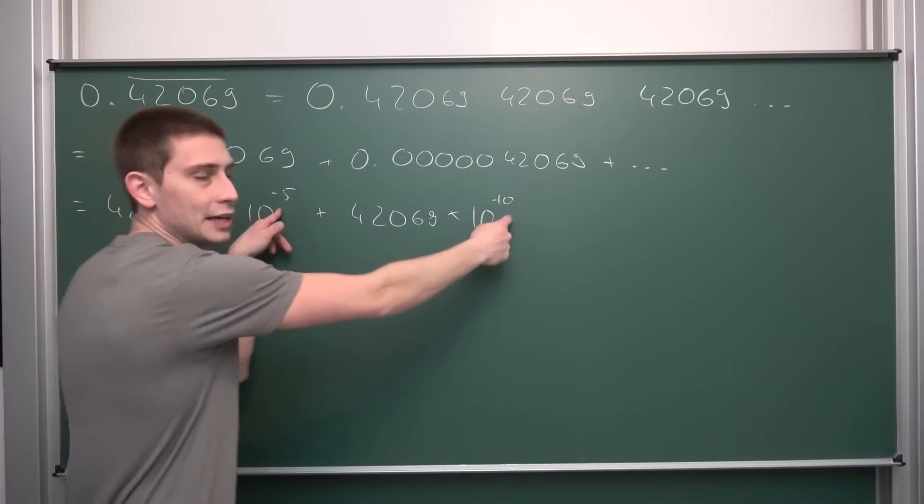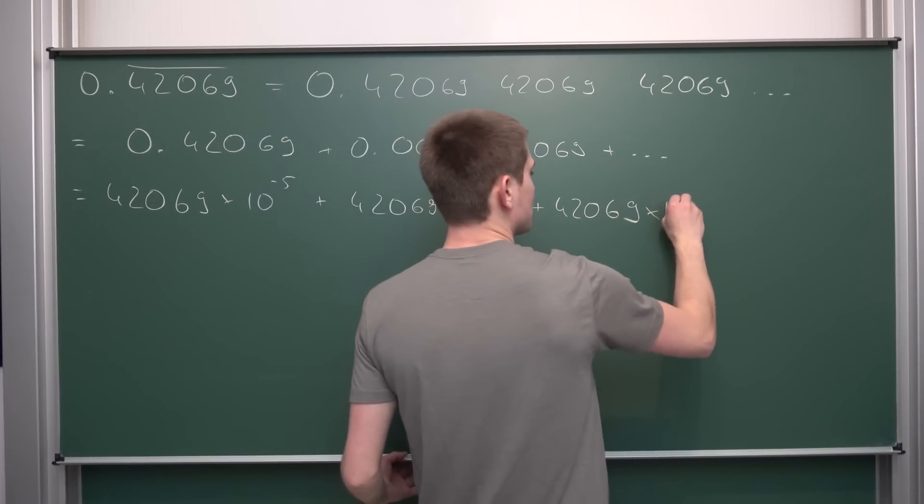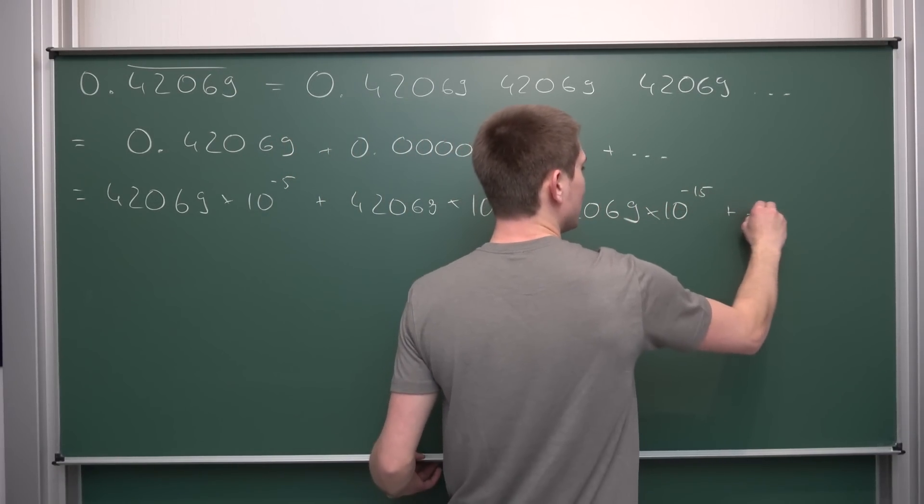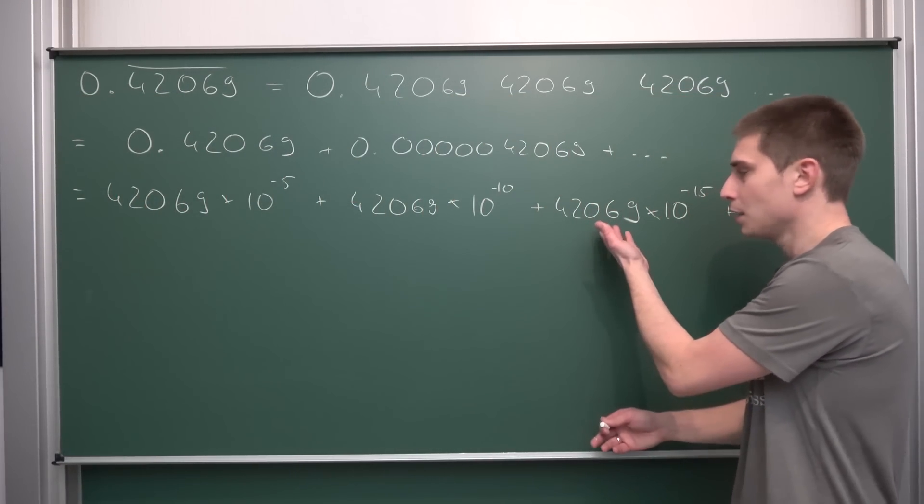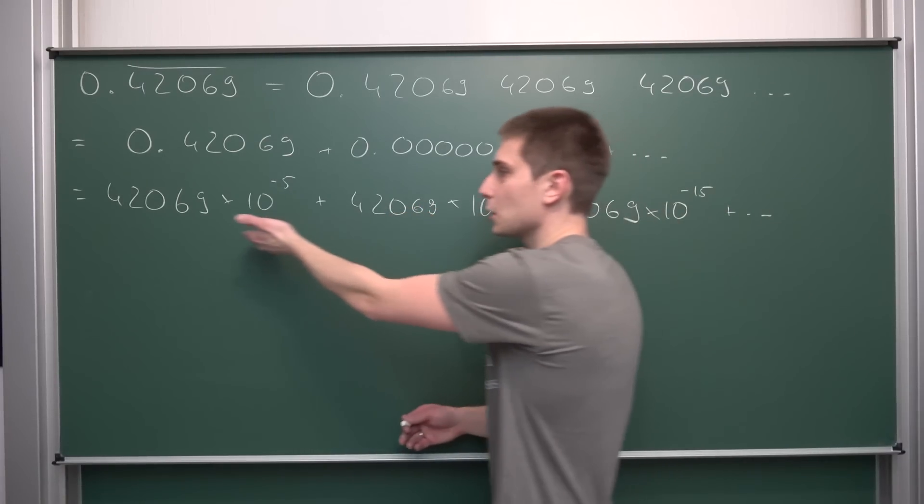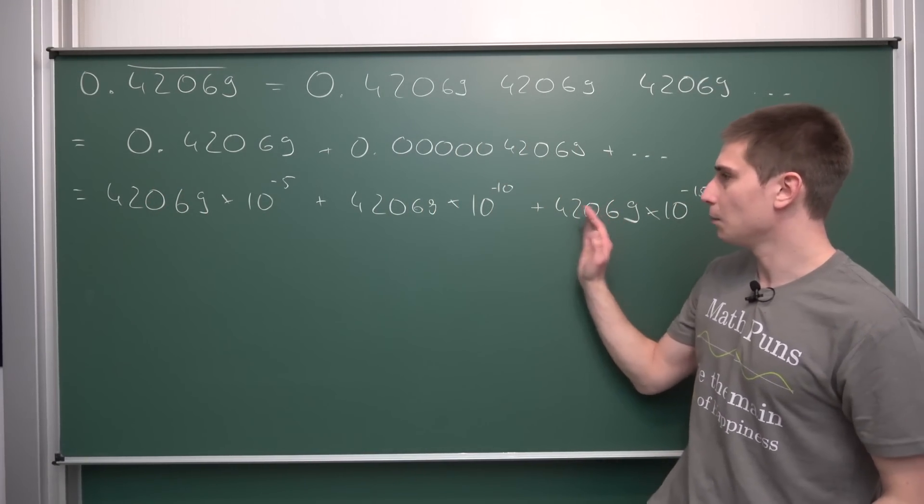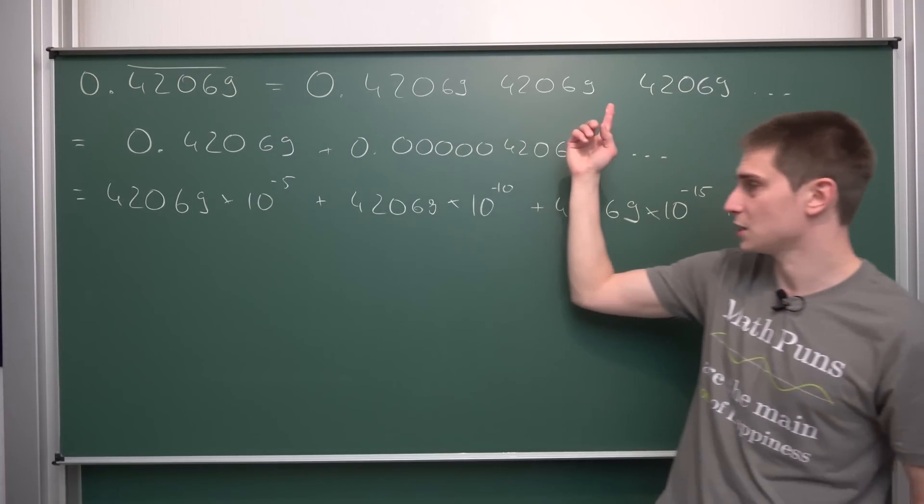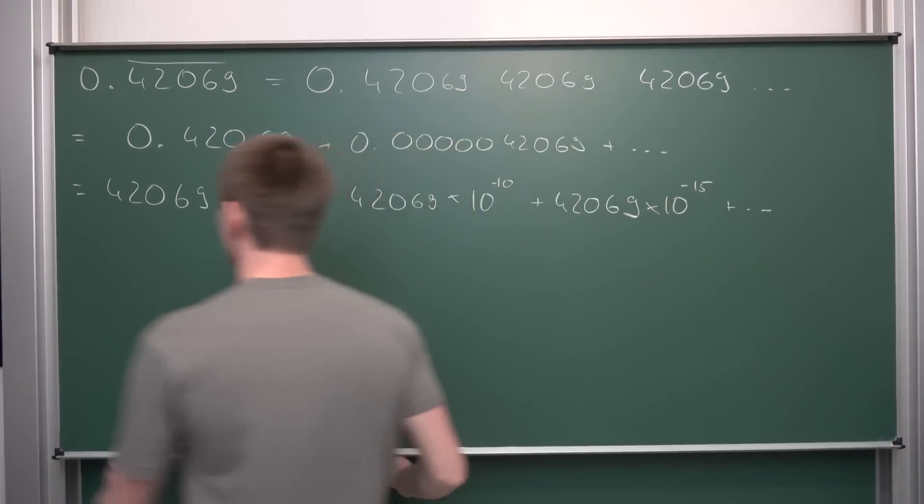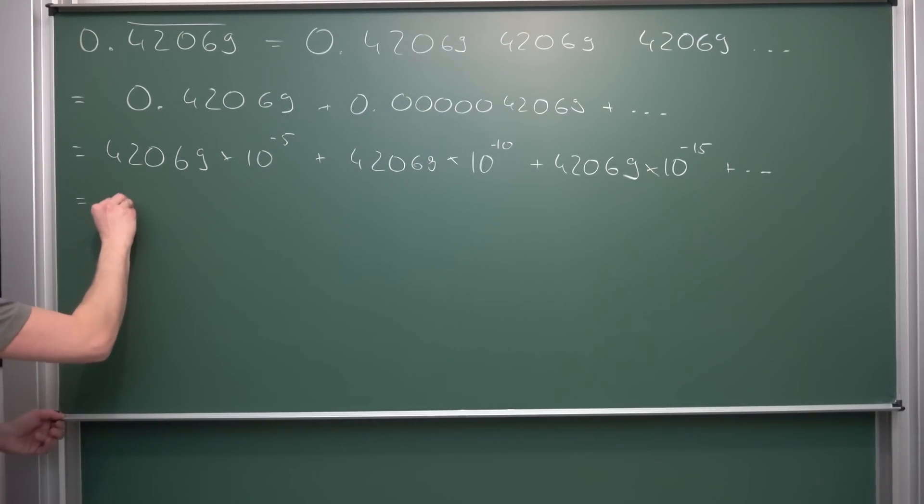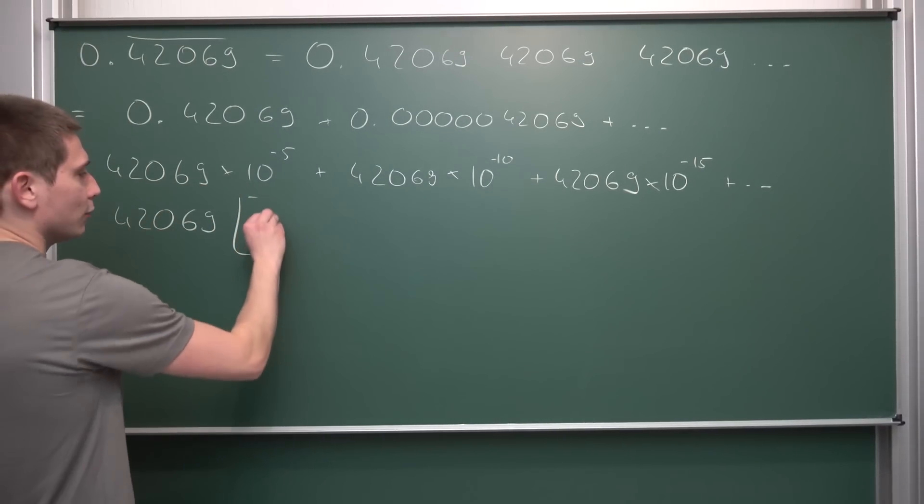You might guess, probably—negative 5, negative 10, next up is going to be plus 42069 times 10 to the negative 15th power, and so on, up until infinity. Now, the cool thing is, we basically extracted our repeating decimal expansion, and actually, it appears on each and every summand. Namely, we can factor it out, leaving us with 42069 times 10 to the negative 5th power.